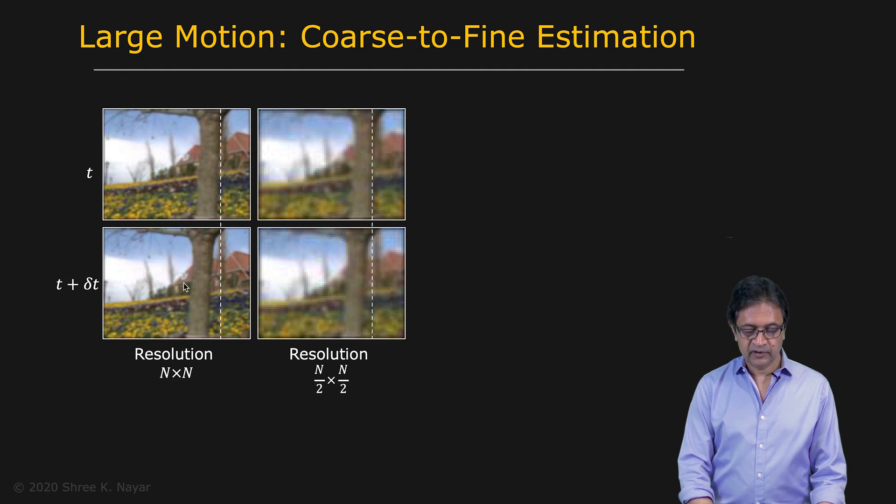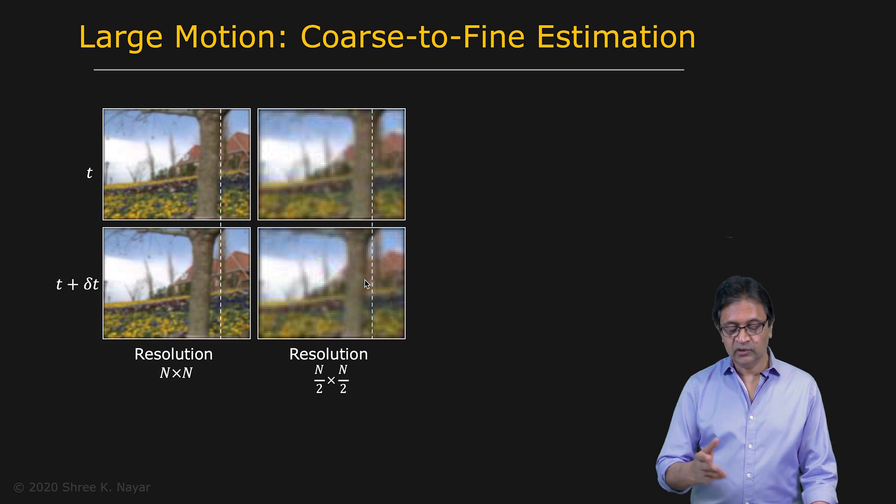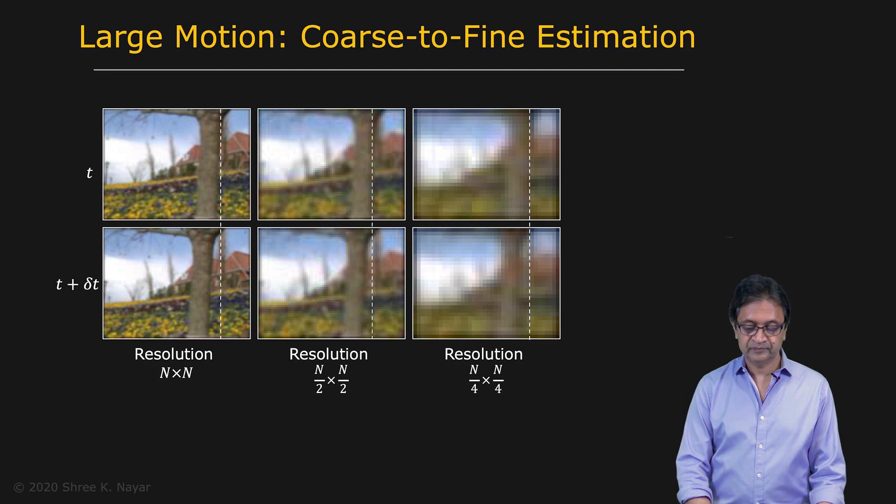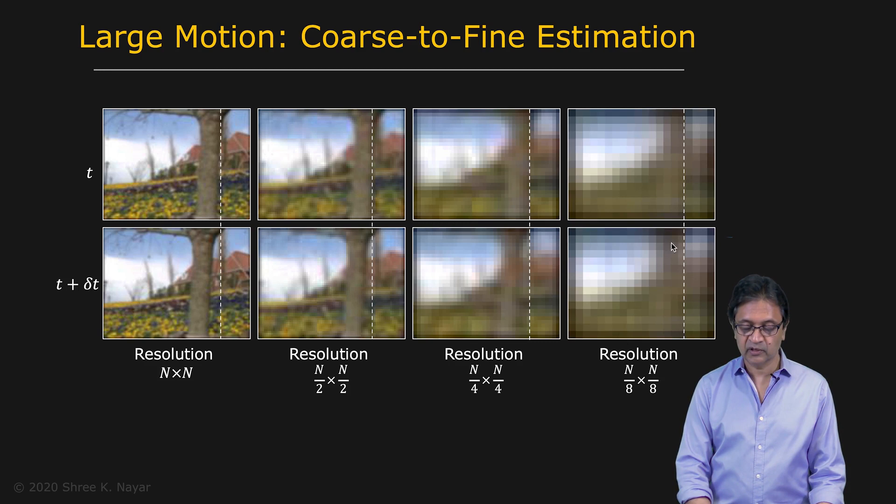But the main point to note here is that if the motion of a particular scene point at this resolution was 100 pixels, it's going to be 50 pixels here. And you keep going. You can go to lower resolutions n by 4 times n by 4, and maybe you come down to n by 8 times n by 8. So very small number of pixels. But at some point,